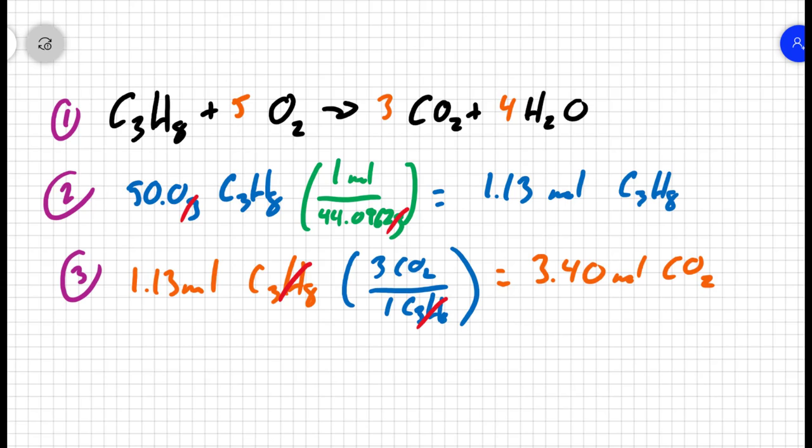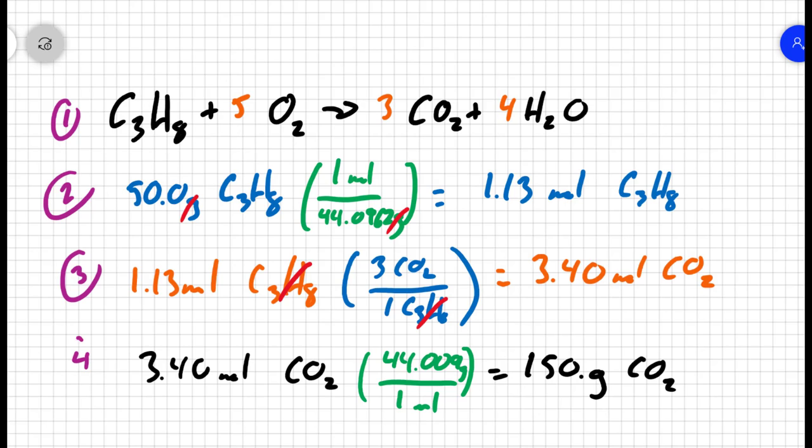Well, the question asks for the mass of carbon dioxide. So if I have 3.40 moles of carbon dioxide, the periodic table tells me there are 44.009 grams for every one mole. And so I produce 150 grams of CO2. So step four is to take our data and convert it back to grams.